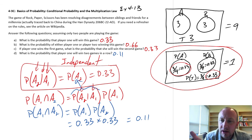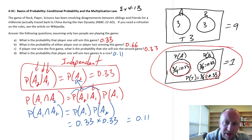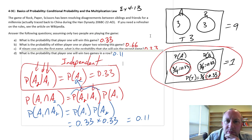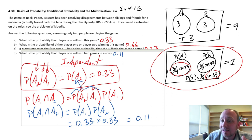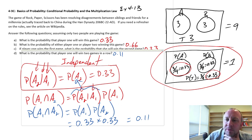I hope that makes sense and helps understand these types of problems using conditional probability and the multiplication law. In this case, we looked at events that are mutually exclusive and events that are independent. Thanks for watching.